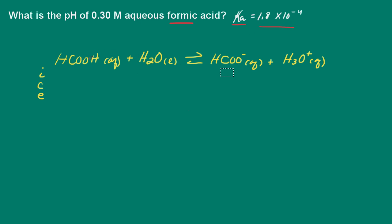So here I have written the ionization, and we have formic acid in water. We were told it was aqueous. And that will partially ionize to produce formate ion and hydronium ion. But not very much is going to dissociate.